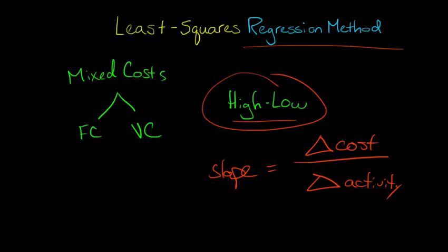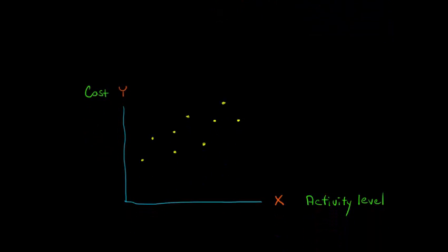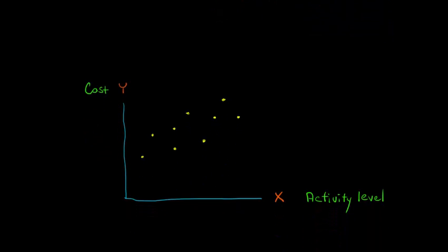With this least squares regression method, we're actually going to use a computer, statistical software programs, Excel, something like that, to run a regression that's going to use all the data points instead of just the highest and the lowest ones. So how would this look in actual practice? Let's say that for our firm we had some mixed costs we were looking at, and then we plotted the cost on the y-axis here, and then we had the activity level, the number of units or so forth. We can plot our points. At this activity level right here, this is our cost. That's our data point that corresponds to that. And so we can plot out these different points, as we've done here.